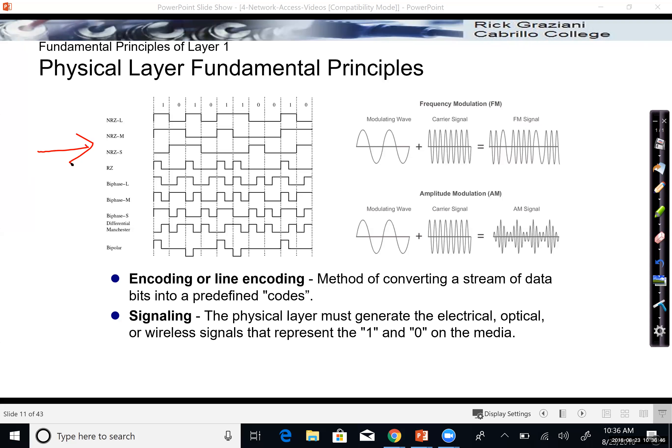So encoding or line encoding, this is actually the method of converting a stream of data into a predefined code. Up here we see some actual different encoding techniques, and I won't go into the details of this. There was a time when I used to teach data communications, and we used to go into encoding and even signaling at some detail. But what I want you to notice here is that we have a stream of bits up here, zeros and ones. And what encoding or line encoding is all about is how to represent those zeros and ones over the medium, code them somehow.